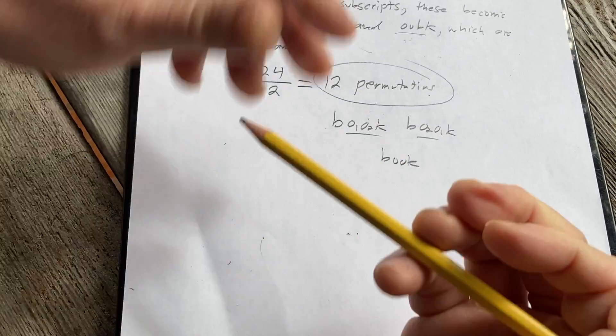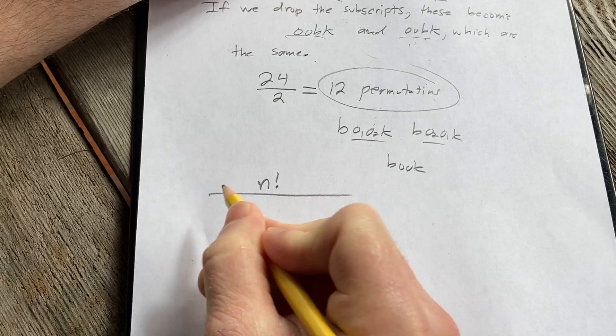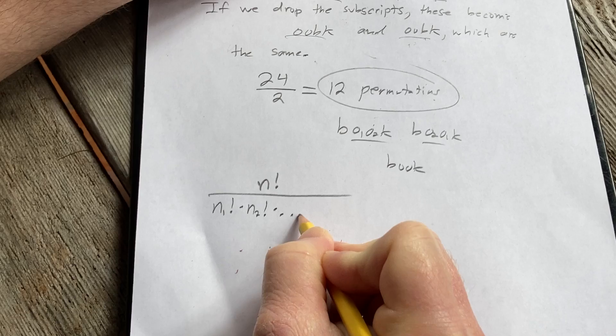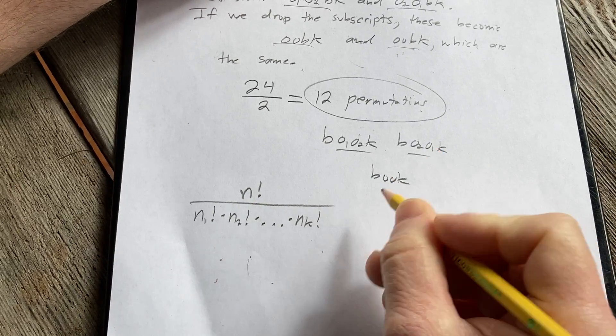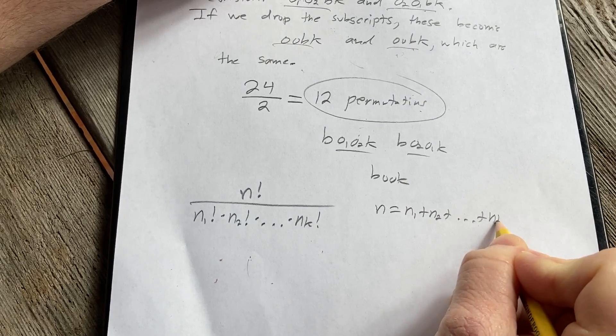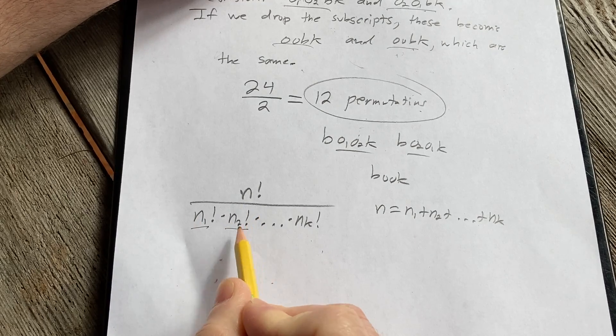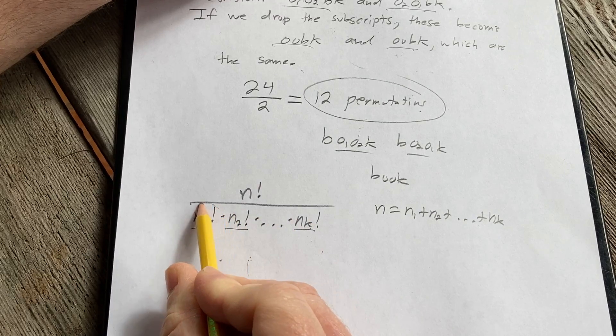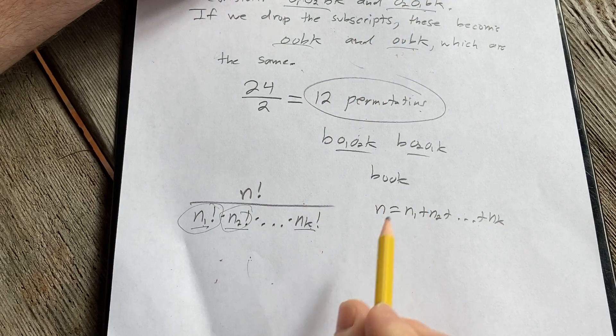The formula, by the way, let me just show you. It's n factorial over n sub 1 factorial times n sub 2 factorial times dot dot dot times n sub k factorial. And in this formula, we have n objects and n is equal to the sum. And we have n sub 1 objects of the first kind, n sub 2 objects of the second kind, and n sub k objects of the kth kind. These are all distinct, but these are identical. So we have n1 identical objects, n2 identical objects.